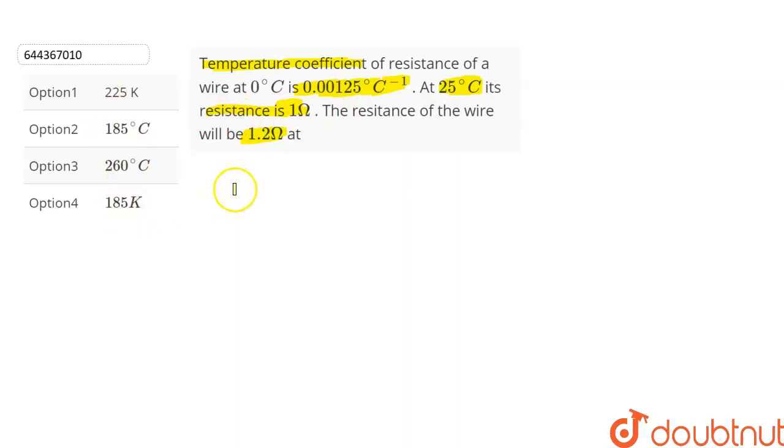We are given four options from which we have to choose the correct option. Let's find out. We know that R is equal to R0 into 1 plus alpha into t, where R is the resistance of wire at temperature t, R0 is the resistance of wire at 0 degree Celsius, alpha is the temperature coefficient of the wire, and t is the temperature.